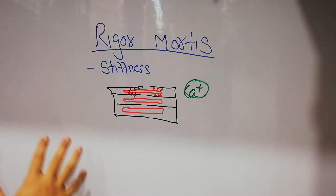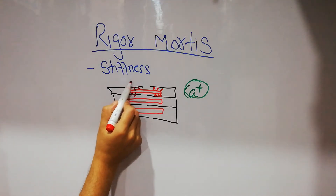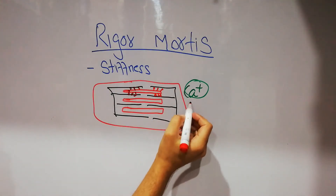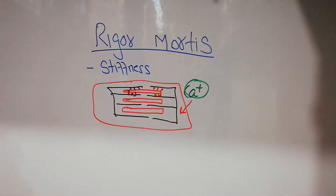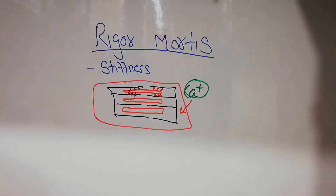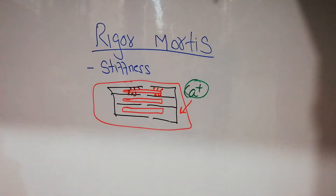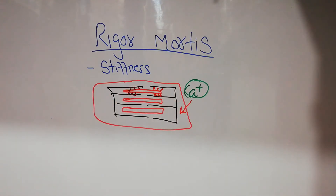When a person dies, the aerobic respiration is finished and the membrane of the muscle fiber becomes very much permeable to the entry of calcium. A lot of calcium comes in and it starts activating the actin and myosin filament, and a compound known as actomyosin complex — a complex of actin and myosin — is formed, resulting in stiffness due to contraction of the muscles.